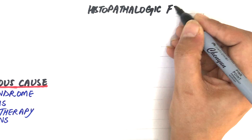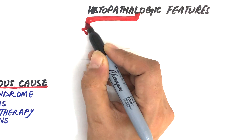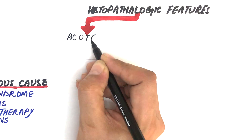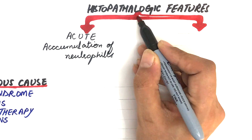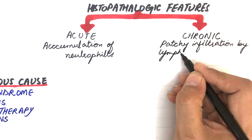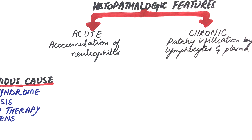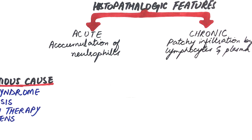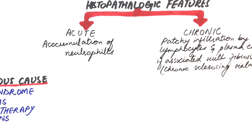Coming to the histopathologic features: in acute bacterial sialadenitis, since the infection is acute, the acini and ducts will be occupied mostly by neutrophils. In chronic sialadenitis, there will be patchy infiltration of salivary parenchyma by chronic inflammatory cells — lymphocytes and plasma cells. Chronic sialadenitis is mostly associated with fibrosis, and for this reason the term chronic sclerosing sialadenitis is used.